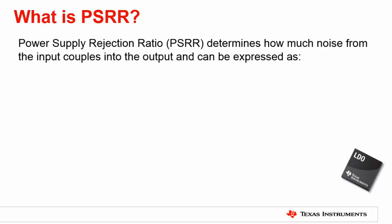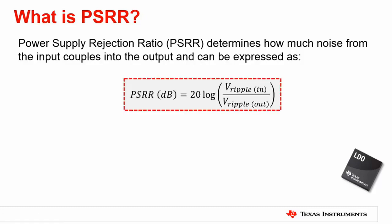So what exactly is PSRR? PSRR is the degree to which an AC element — usually a voltage generated from a switch mode power supply of a certain frequency — is attenuated from the input to the output of the LDO. In other words, it determines how much noise from the input couples into the output. This ratio can be expressed as: PSRR equals 20 multiplied by the log of the input voltage ripple over the output voltage ripple. This equation also tells you that the higher the attenuation, the higher the PSRR value is in decibels.